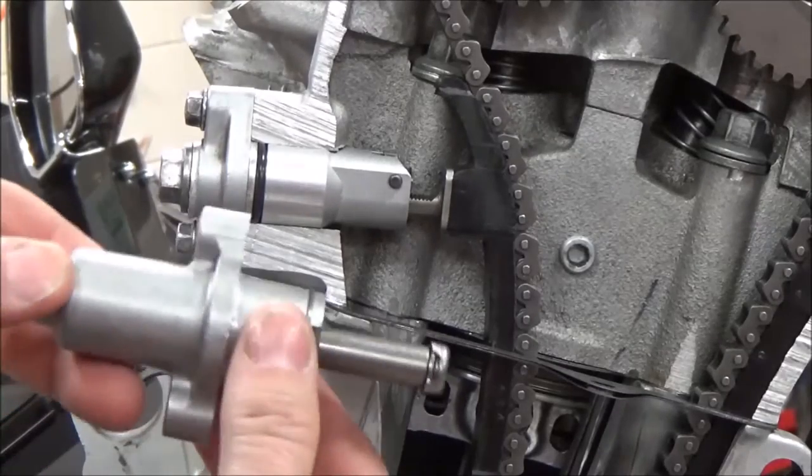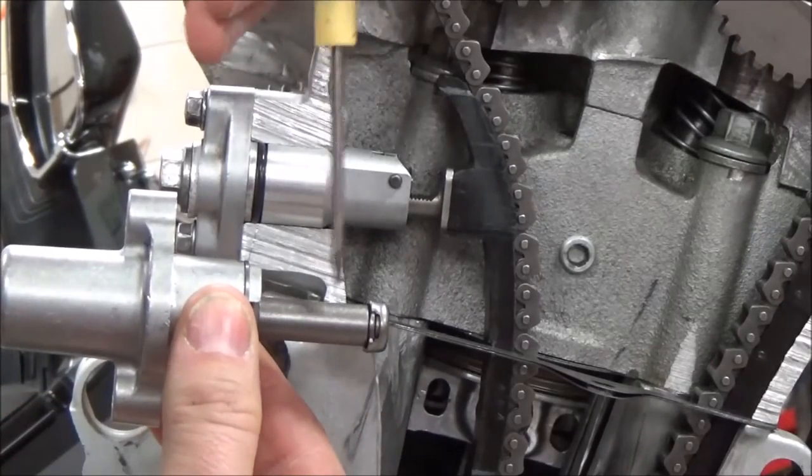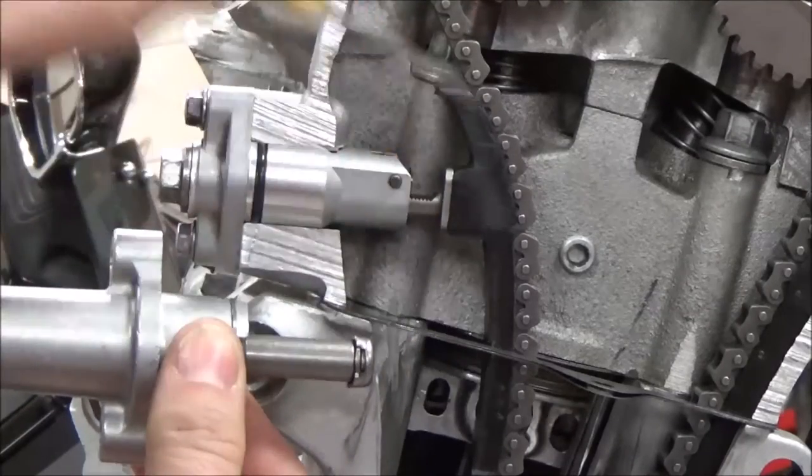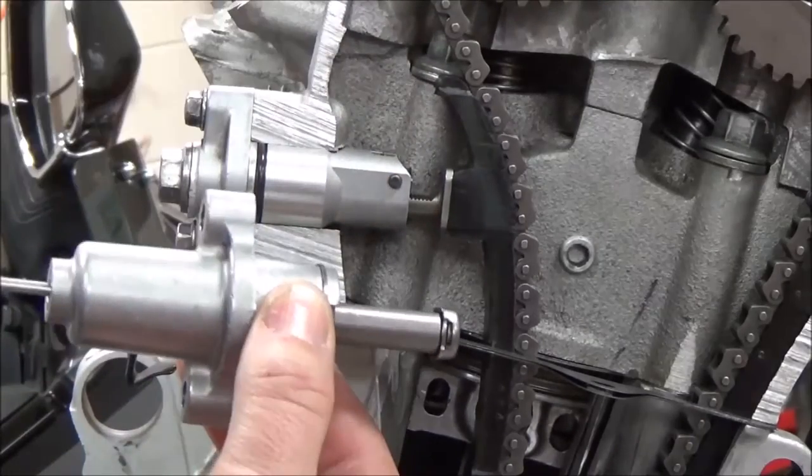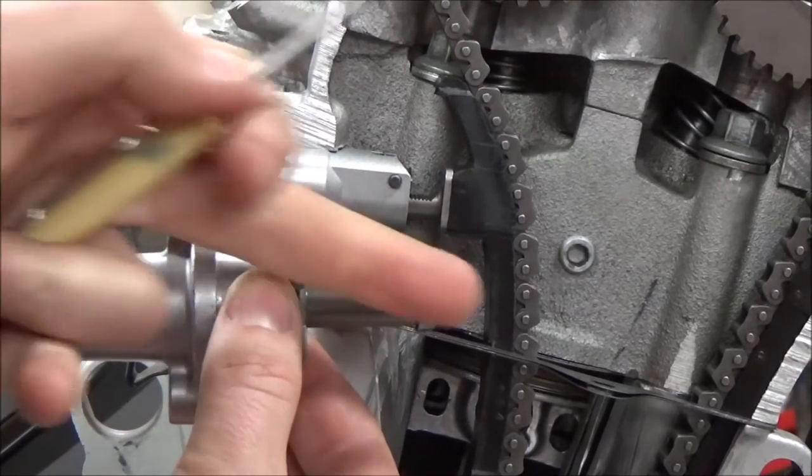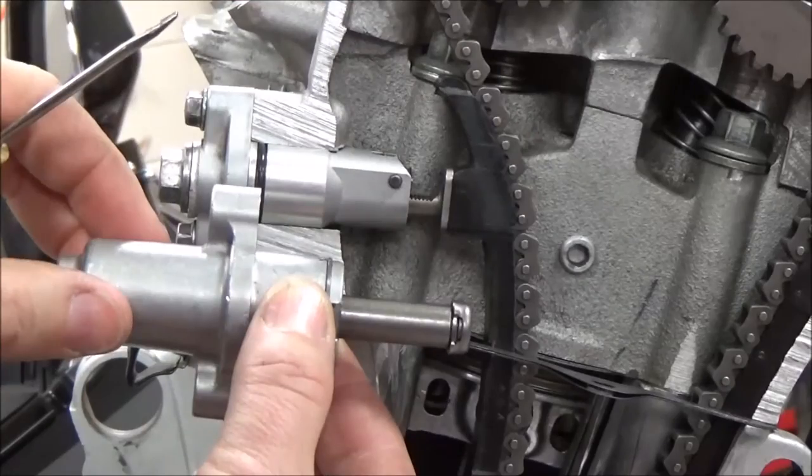Look at this cutaway engine here, and you can see what I was showing on this plunger. On these automatic types, what we're doing is we're taking up this free play, and as that chain stretches, that is going to let that just go out and take up that free play.